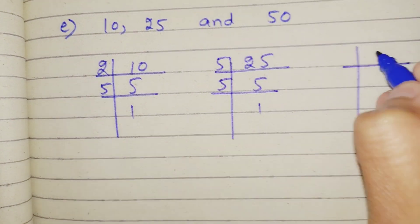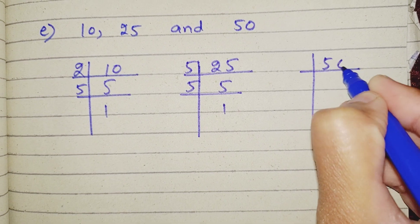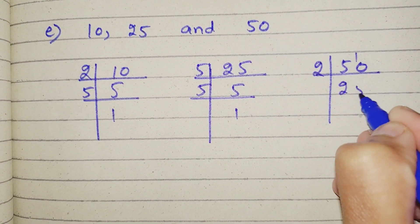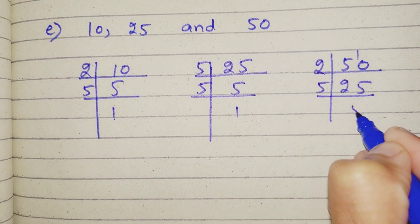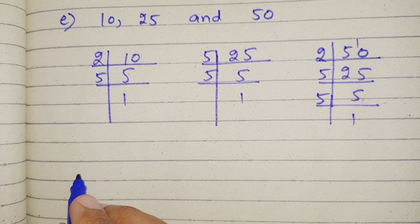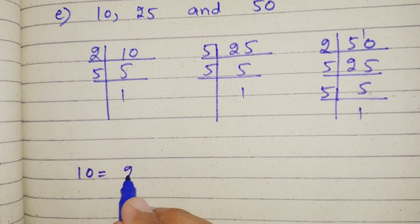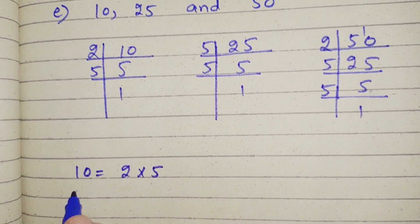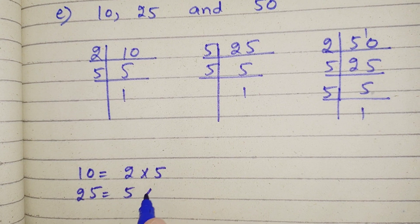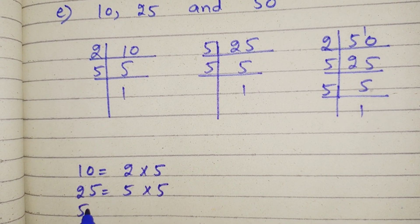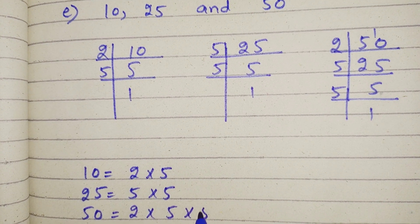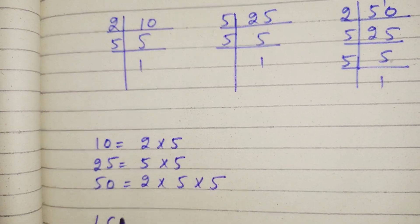50: 2 2s are 4, 2 5s are 10, 5 5s are 25, 5 1s are 5. 10 کے ہمارے پاس کونسے فیکٹرز آگئے ہیں: 2 × 5. 25 is equal to 5 × 5. 50 is equal to 2 × 5 × 5. تو LCM is equal to...